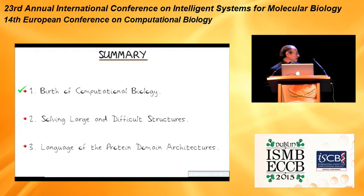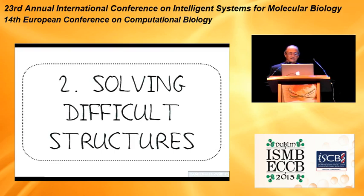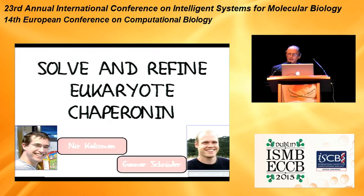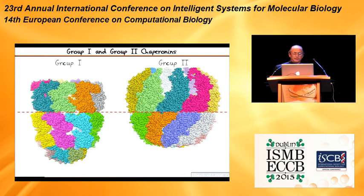Let me now move on to the main body of the talk: Solving Large and Difficult Structures. We're going to talk about an important protein system — eukaryote chaperonin. This work was done with Nier Kalisman, who at the time was a postdoc, and Gwyneth Schroeder, who was a postdoc and is now an independent scientist in Zurich. Nier Kalisman has just moved into a tenure-track position in Jerusalem. Chaperonins come in two groups. There's group one, which occurs in bacteria, and group two, which occurs in archaea and in eukaryotes. Both proteins are like spheres or cavities.